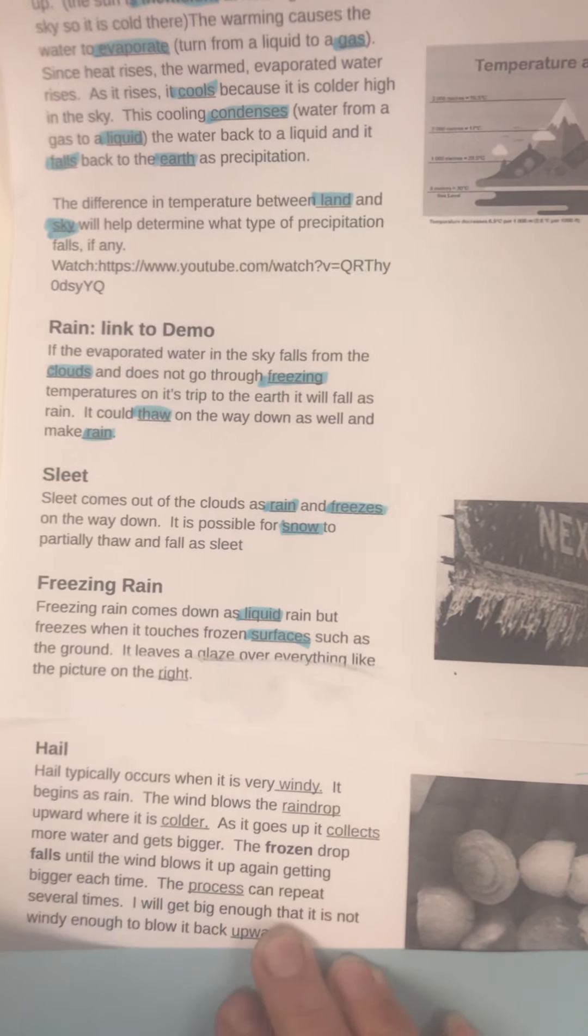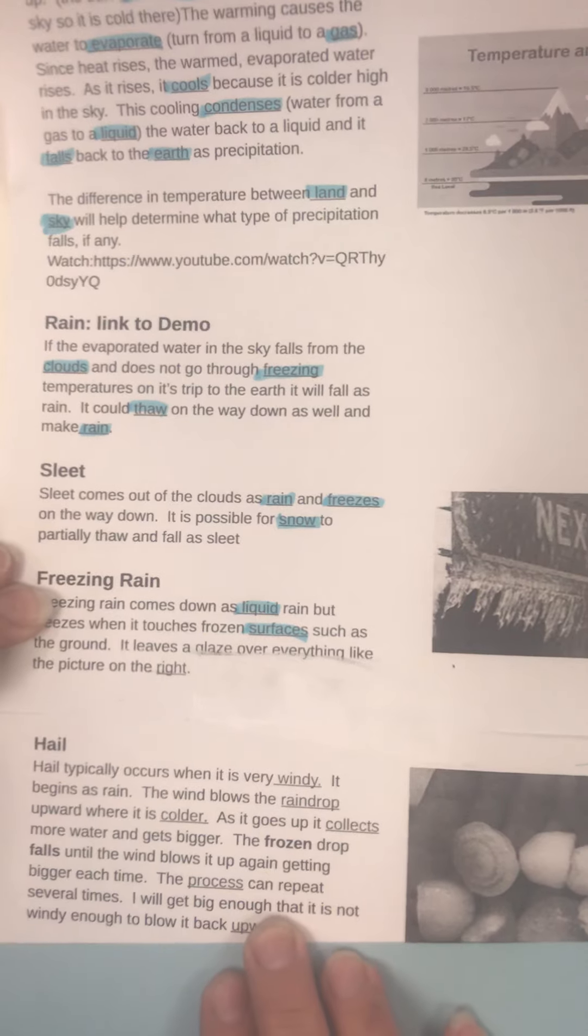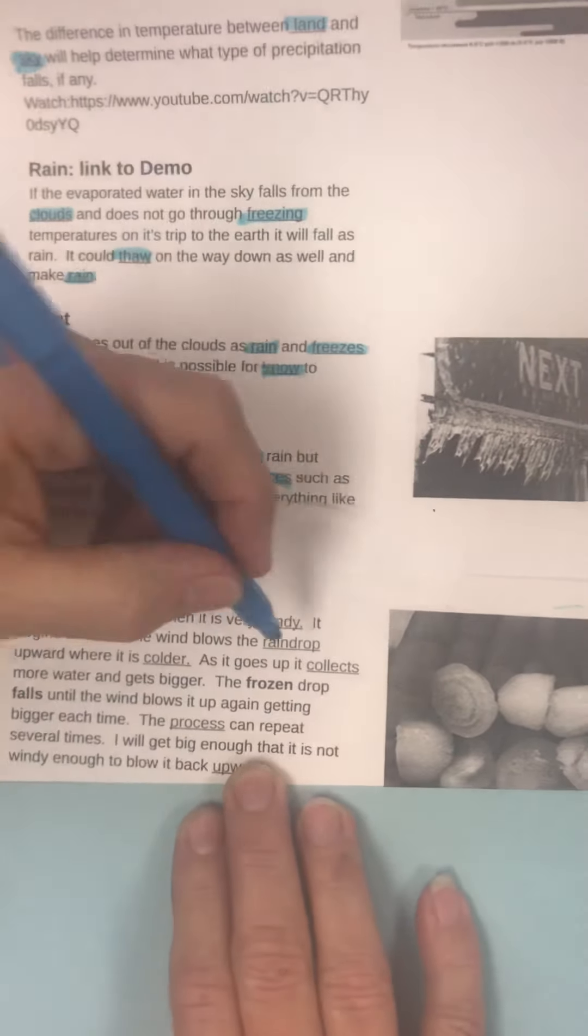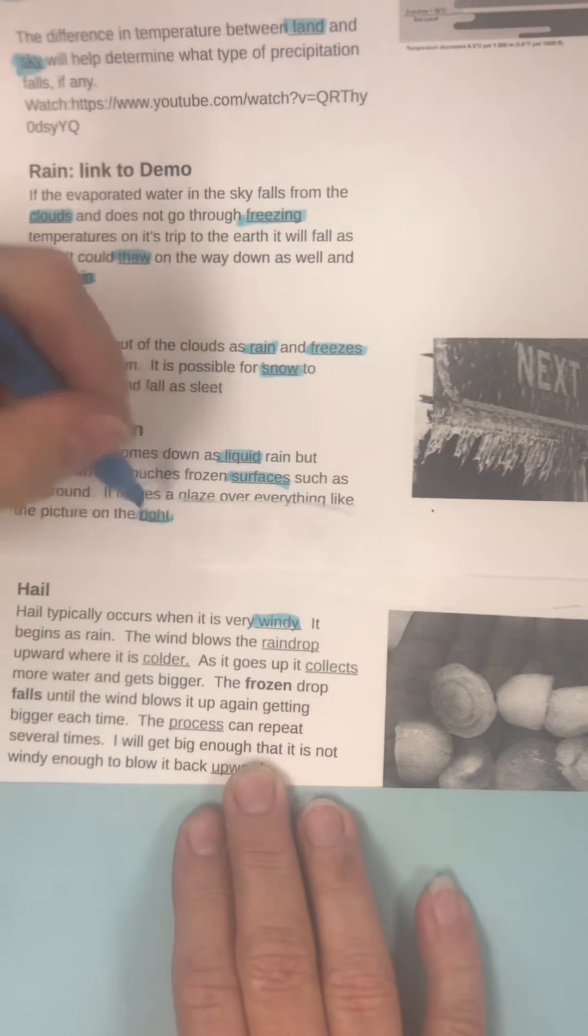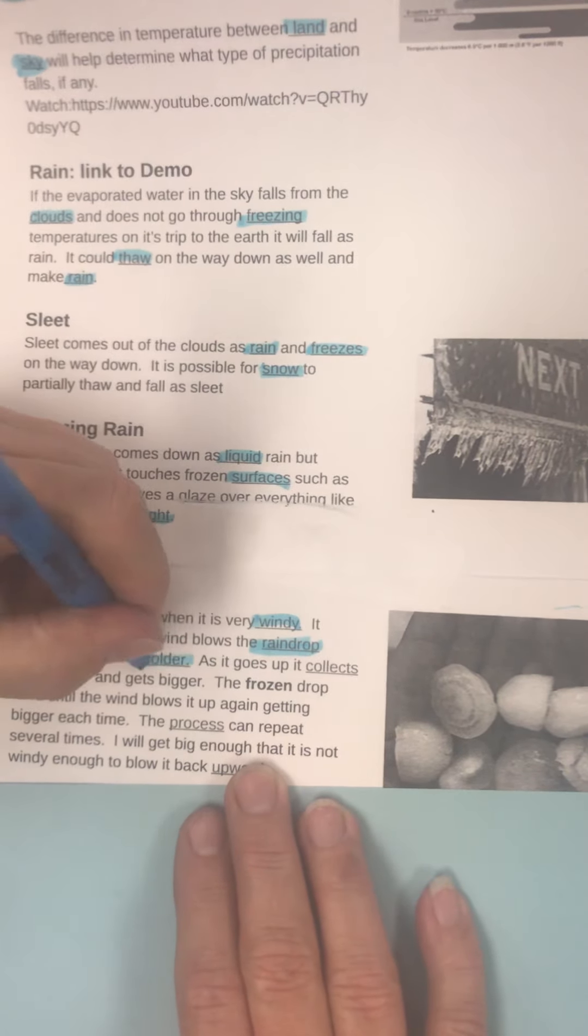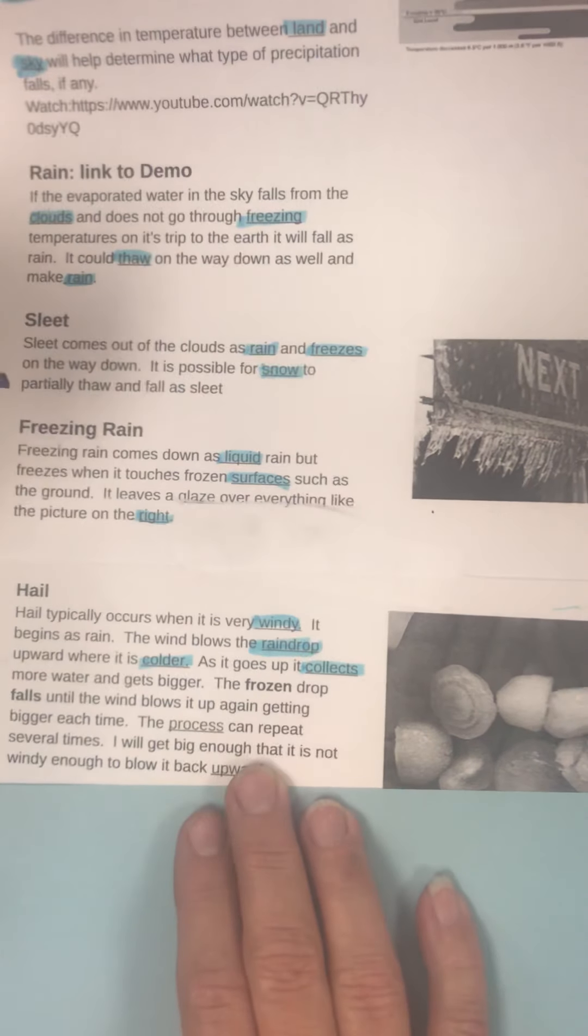Hail. Hail typically occurs when it's very windy. It begins as rain. The wind blows the raindrop upward where it is colder. As it goes up, it collects more water and gets bigger.